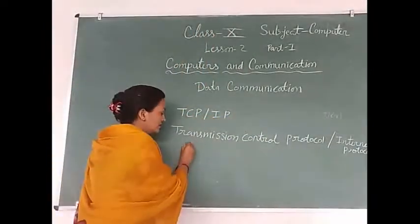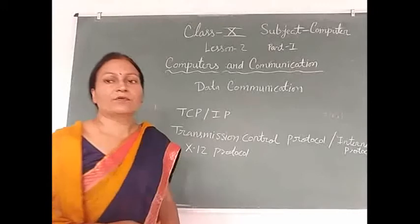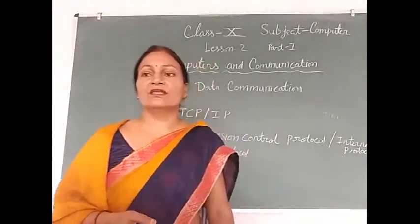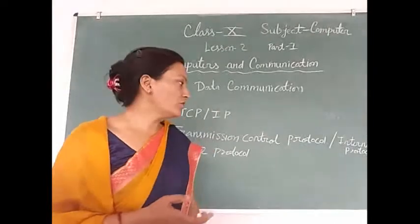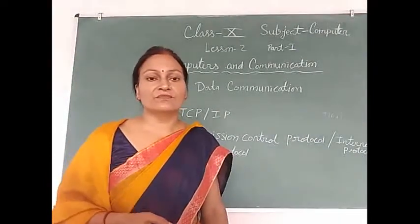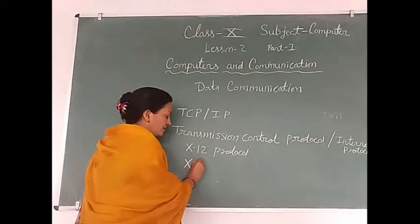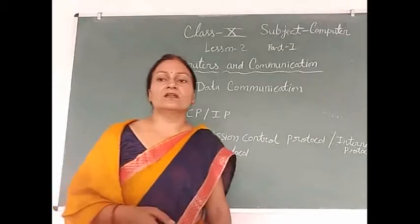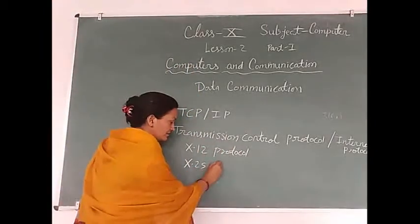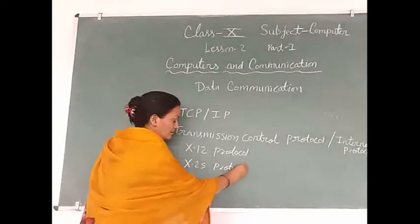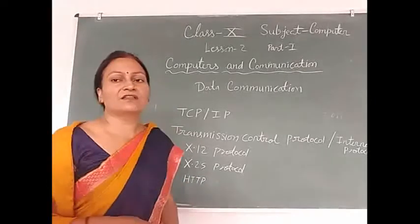Another protocol is X.212. This protocol is used to establish connection between companies to exchange important papers. There are different types of protocols and they follow different rules to send messages. Next is the X.25 protocol, which establishes the interface for a common data network.